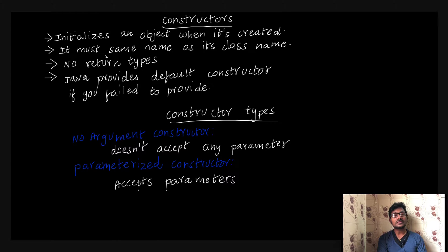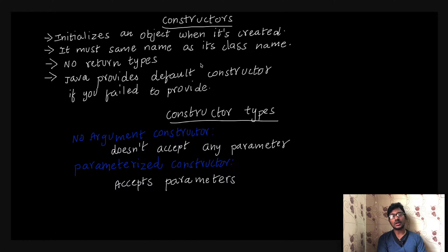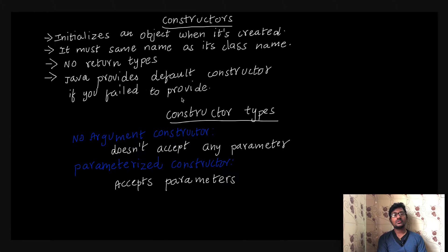The second point is that a constructor must have the same name as its class name — the constructor name and class name should be the same. The third point is that it should not have a return type at all. The fourth point is that Java provides a default constructor if you fail to provide one — Java automatically picks a default constructor even if you don't define one.